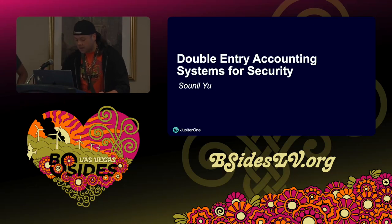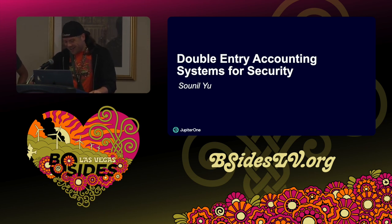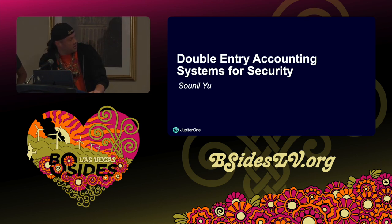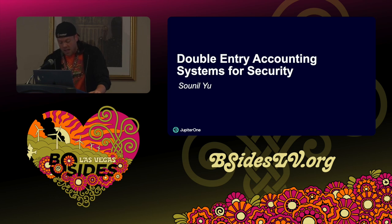All right, good morning everybody. Welcome to B-Sides Las Vegas. This is the Ground Truth track. Today we have Samuel Yu and he's going to be giving a presentation: Double Entry Accounting Systems for Security. Just a couple quick announcements before we begin. I'd like to thank our sponsors — our diamond sponsor Adobe and some of our gold sponsors: Prisma Cloud, SEMGREP, and BlueCat.